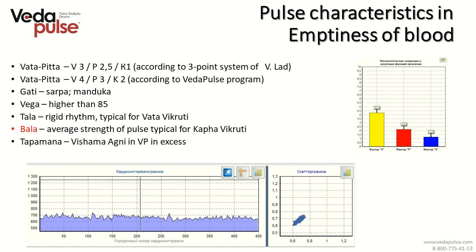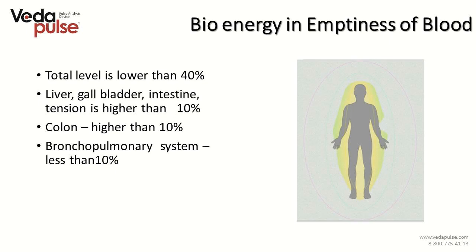Vata-Pitta people in imbalance would have a tendency to Vishama Agni, or unstable digestion fire. The percentages shown next to the picture indicate features of regional blood flow in different areas of the body. The total level of bioenergy is 40%, confirming low energy levels for this constitution type. Trigger organs with increased tension — showing risk of disease — are liver, gallbladder and small intestine, which would have tension levels above 10% versus the normal value of 8%. There is also Panovata tension associated with colon and certain tension of Pranovata associated with bronchial-pulmonary systems.